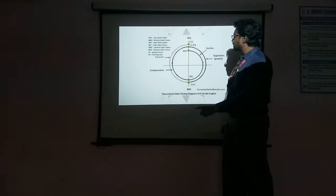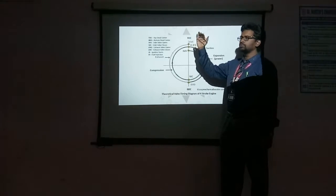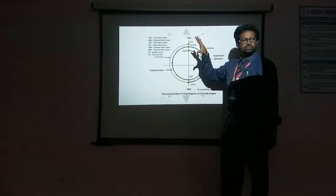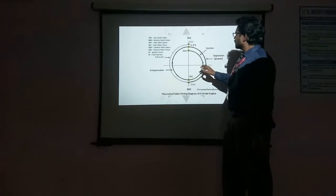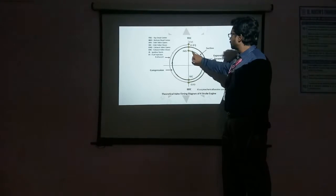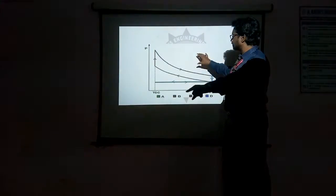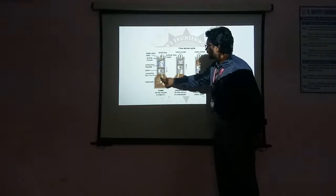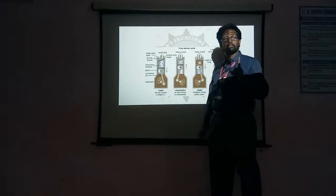This is the valve timing diagram. During the suction stroke, the piston is moving from top dead center to bottom dead center — the same stroke is represented in the PV diagram as a straight line, meaning volume increases and pressure is constant. The crank is rotating, and two revolutions in the four-stroke engine represent one complete cycle.